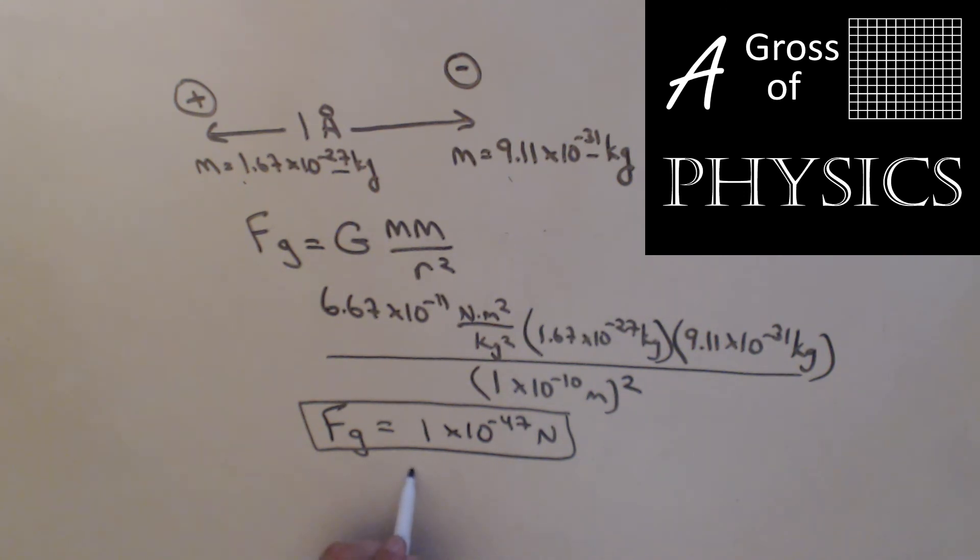Gravity does exist, but it's a very small number. We're talking about 46 zeros, decimal place, 46 zeros, and then a 1. That's quite a bit. But we can calculate it using our big G equation. So you can find the value of the attraction between any two objects in the entire universe, even objects as small as a proton and an electron.